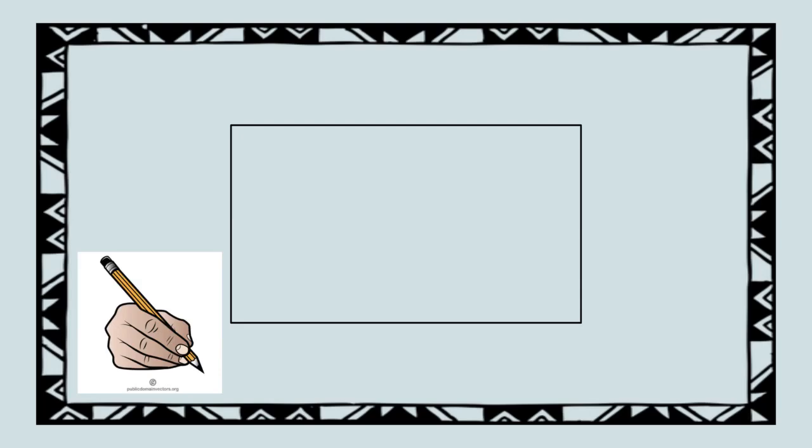Let's spell draw. Let's say the sounds we hear. Ready? D-R-AW. First we heard D, so we need the letter D. Next we heard R, so we need the letter R. Last we heard AW, so we should use the letters AW. This is how we spell draw: D-R-AW.